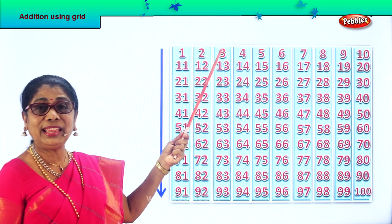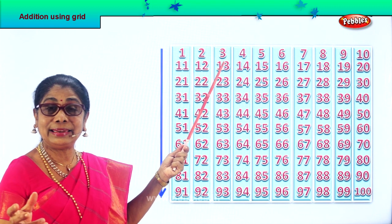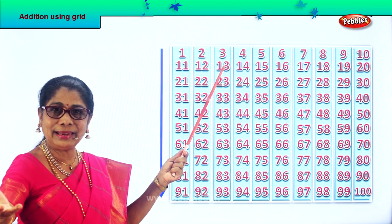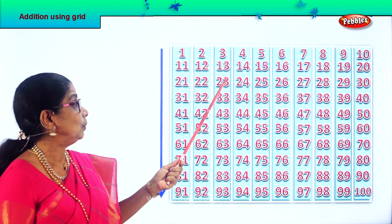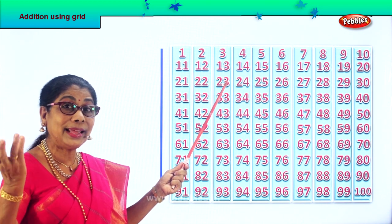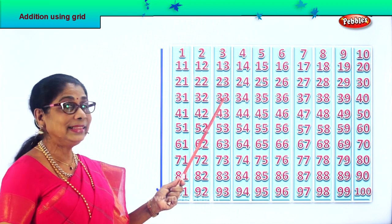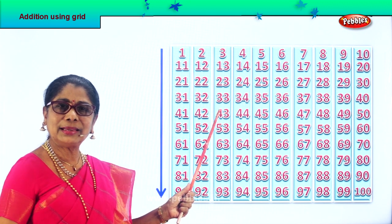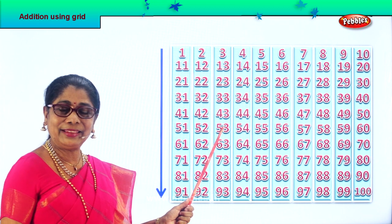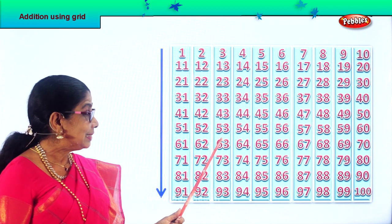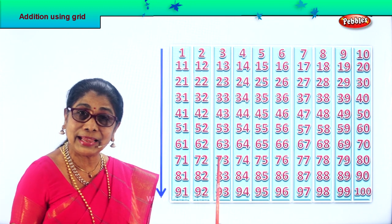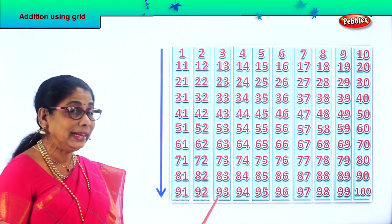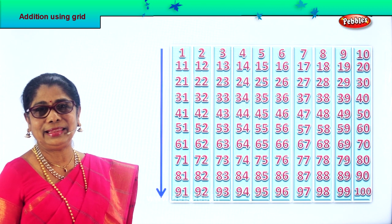Look at this. To 3 you add 10 — 10 plus 3? 13. Plus 10? 23. 23 plus 10? 33. 33 plus 10? 43. 43 plus 10? 53. 53 plus 10? 63. 63 plus 10? 73. 73 plus 10? 83. 83 plus 10? 93.